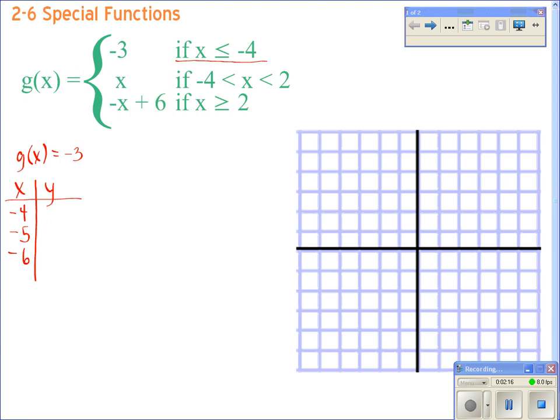We're only going to pick three points for each one, figure out where they are. So if we put in a negative 4 into this equation right here, there's nowhere to put that value, correct? So our answer is simply just going to be negative 3 for all of them. I'll show you what it is in a second.